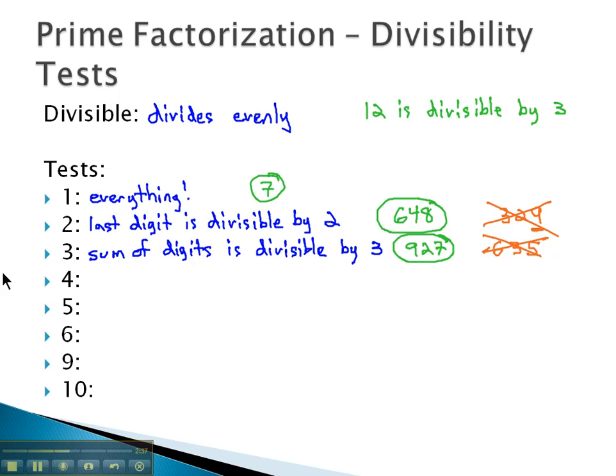To decide if a number is divisible by 4, similar to 2, we will look at the last 2 digits. If the last 2 digits are divisible by 4, then the entire number is divisible by 4.